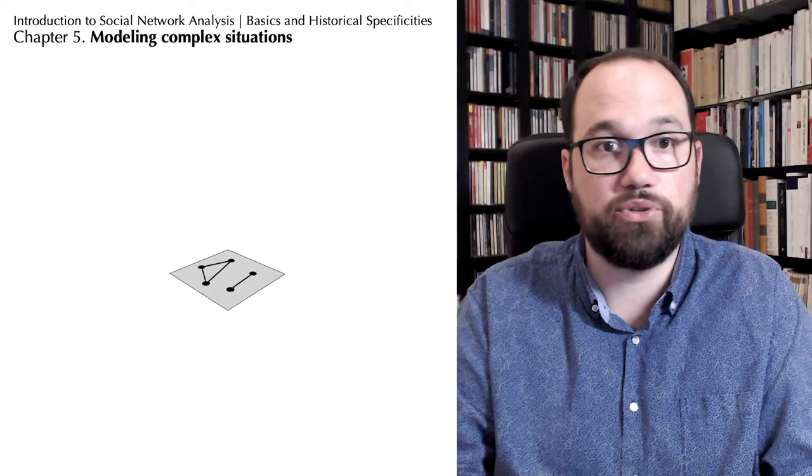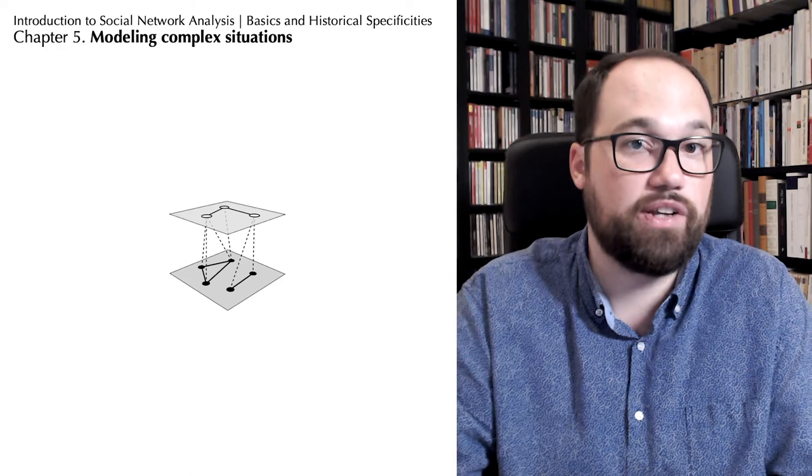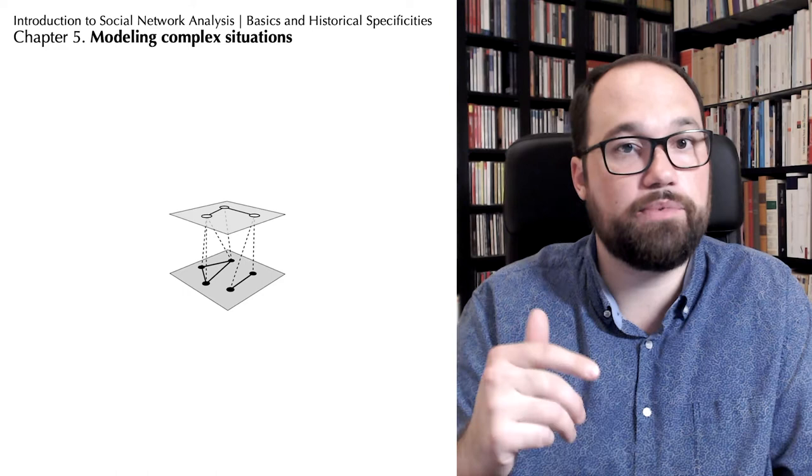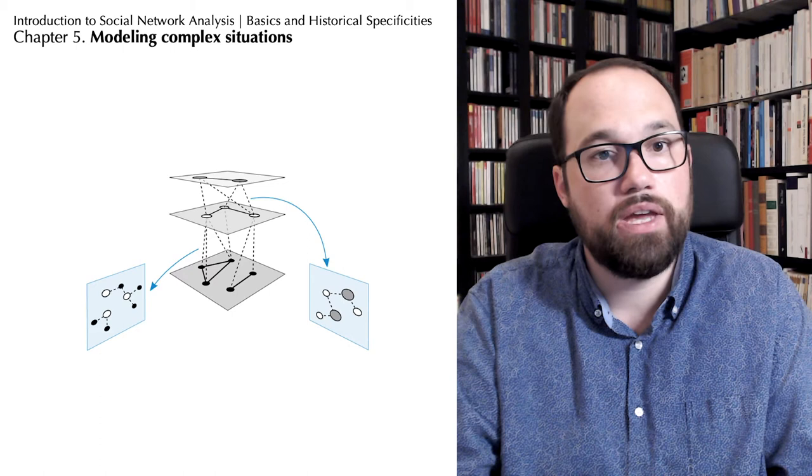Most of the time, we start from a simple layer, composed, for example, of individuals and interpersonal relationships. Often, these individuals also have relationships with entities located in another layer, for example, institutions with which they are affiliated. There are relationships on each of these layers, but also between them. In an affiliation network, it would be precisely the two-mode network that we'll project next.